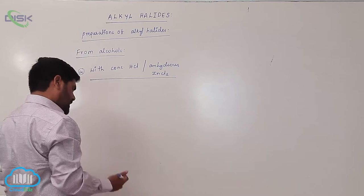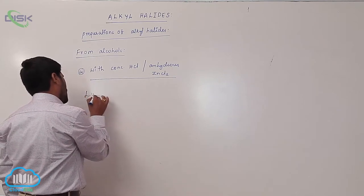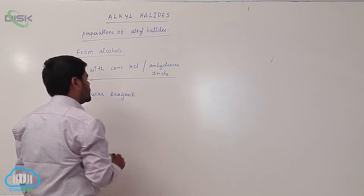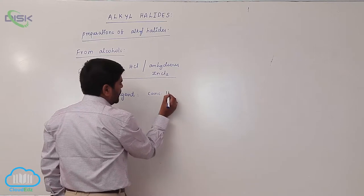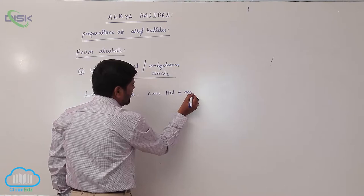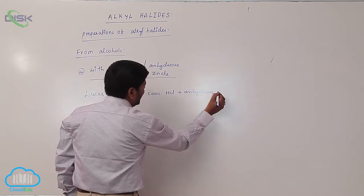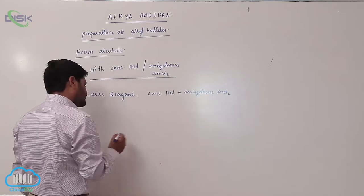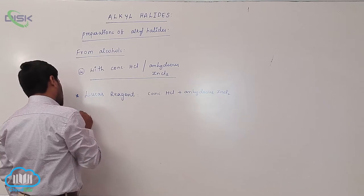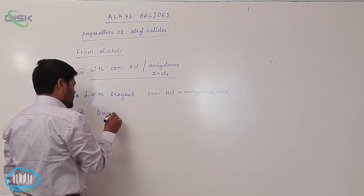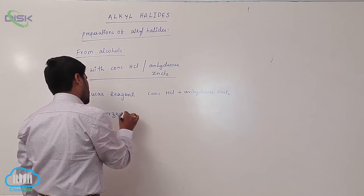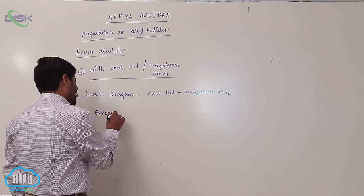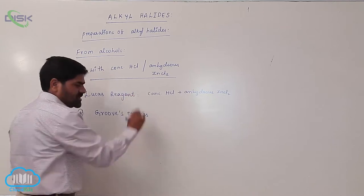This is known as Lucas reagent: concentrated hydrochloric acid plus anhydrous zinc chloride. This particular process is known as the Lucas process.